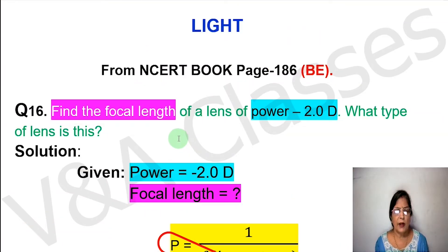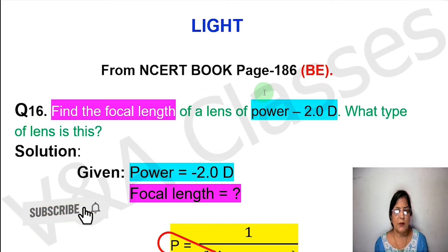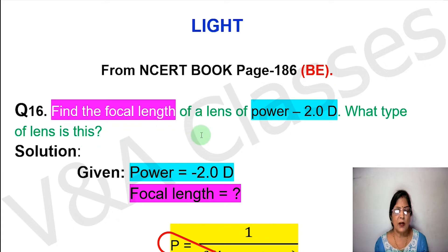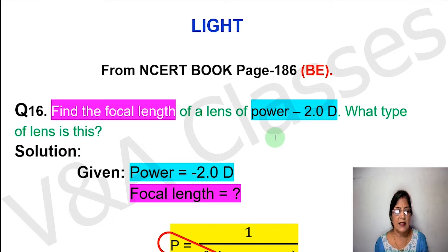Students, hope you are doing well. In this video we will discuss question no. 16 from the NCERT book, page 186, back exercise. The question is: find the focal length of a lens of power minus 2.0 diopters. What type of lens is this? The question says the power of a lens is minus 2.0 diopters — find the focal length and the type of lens.